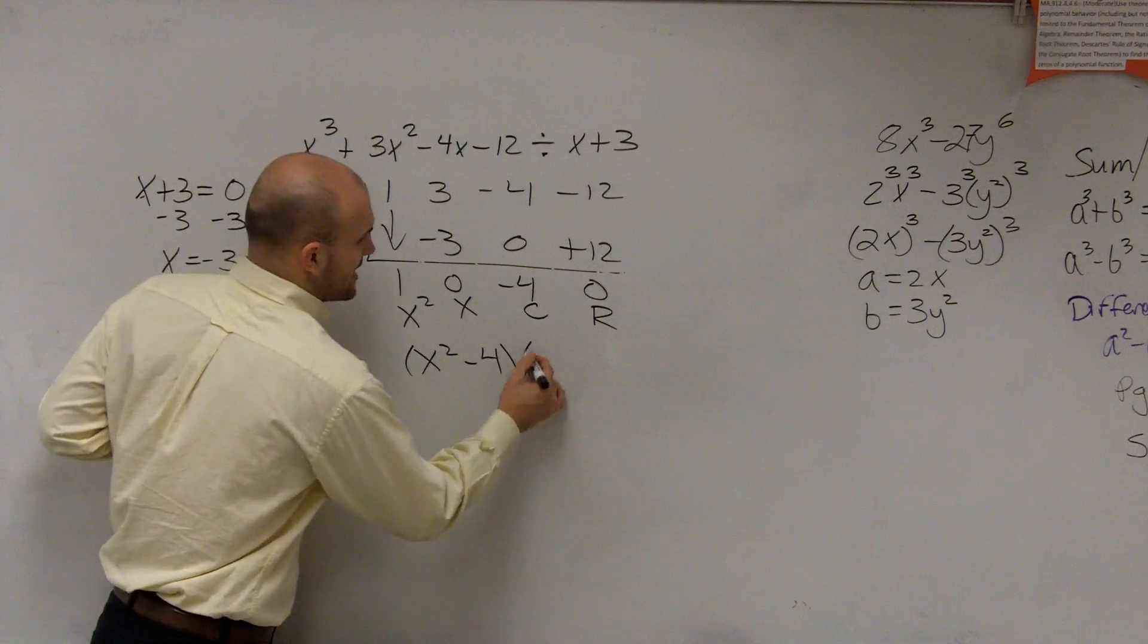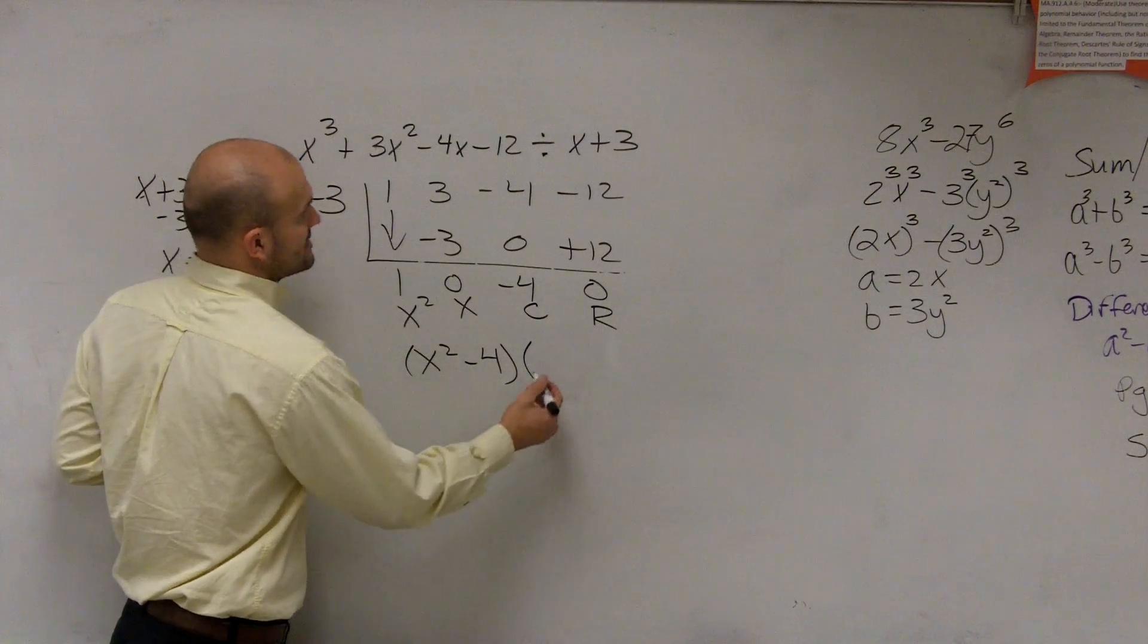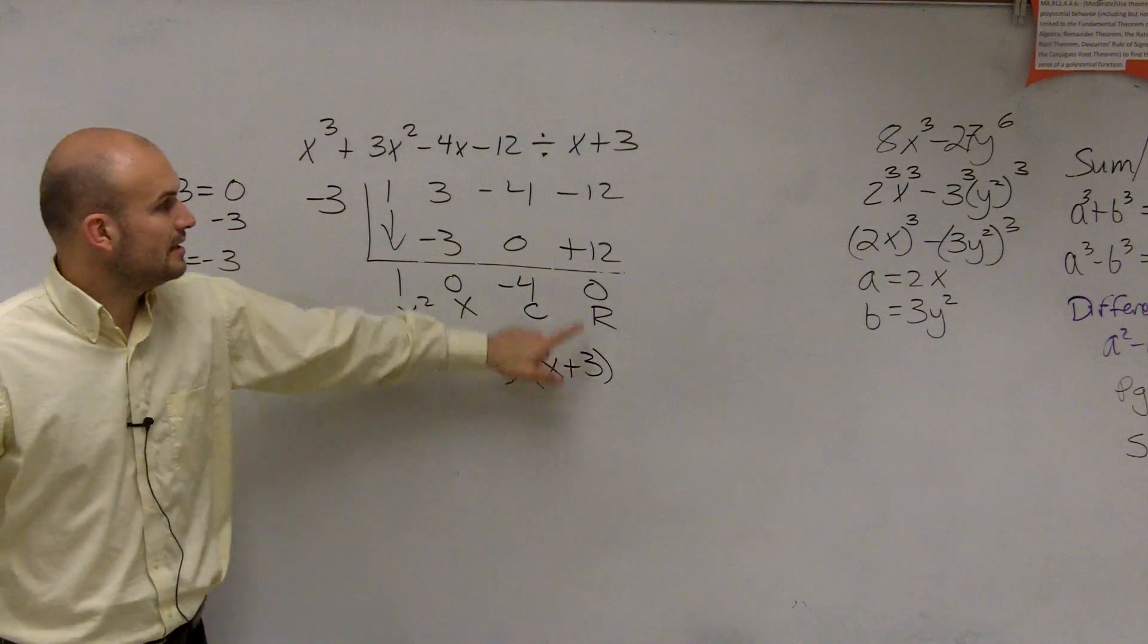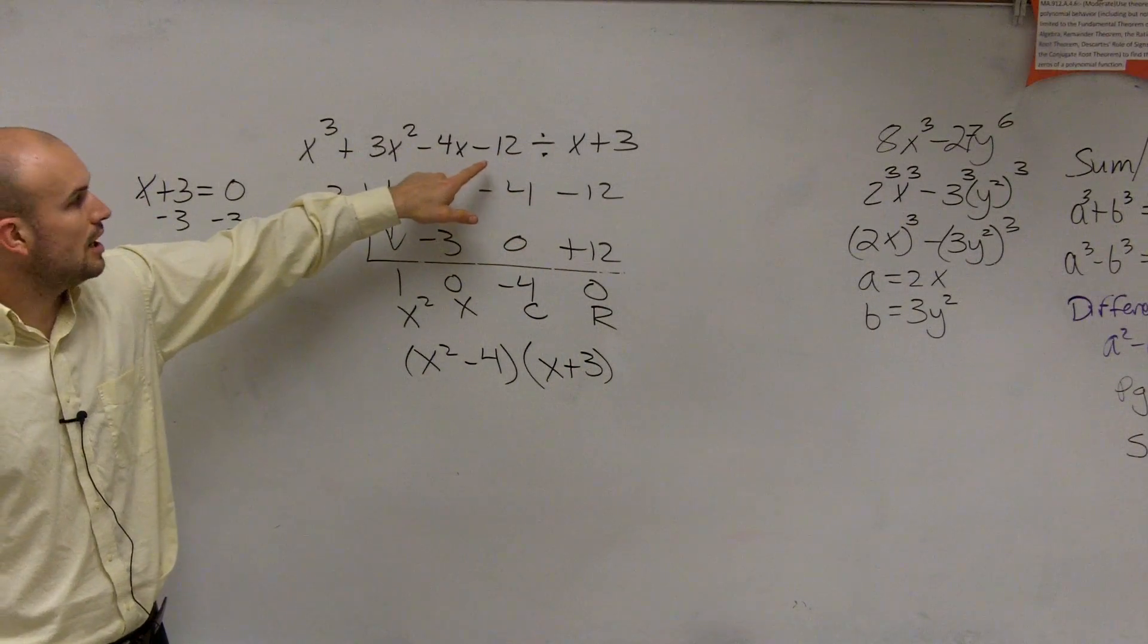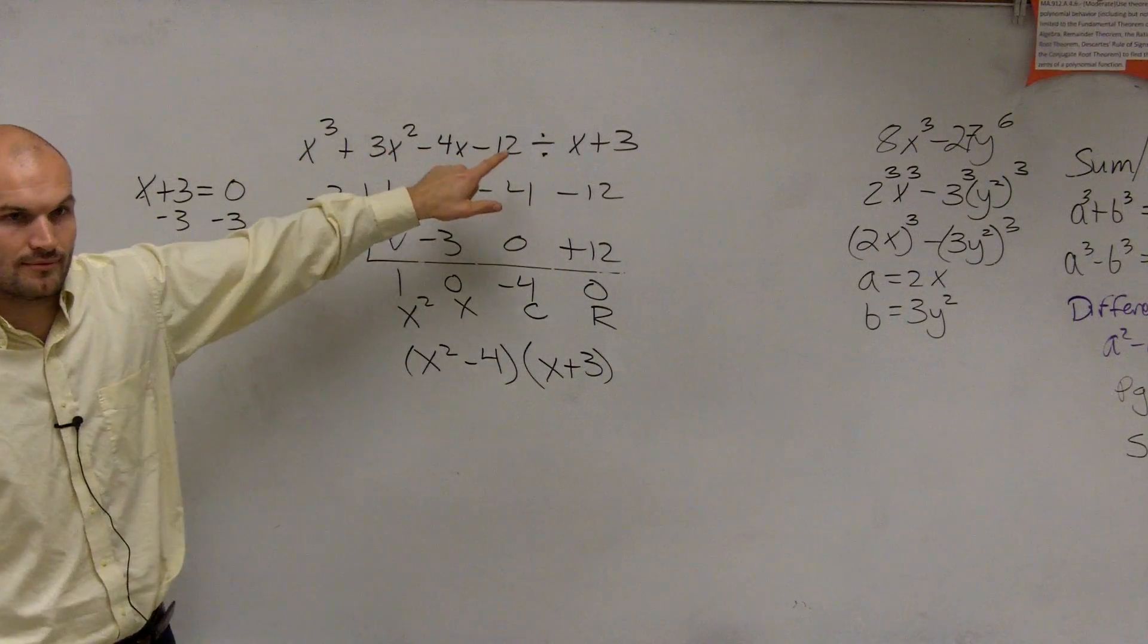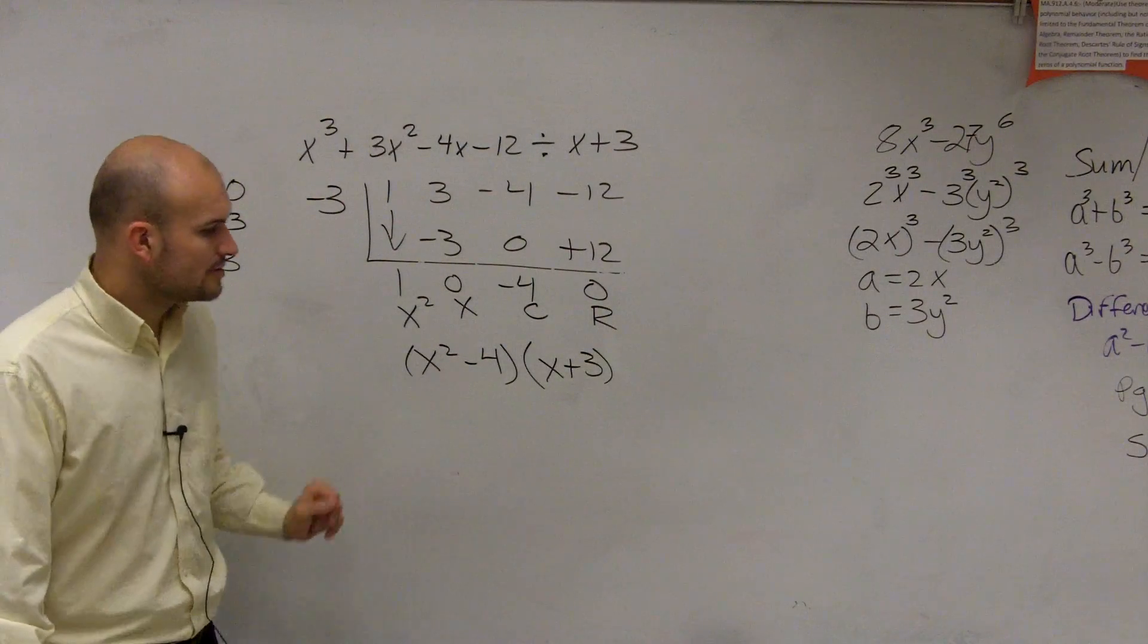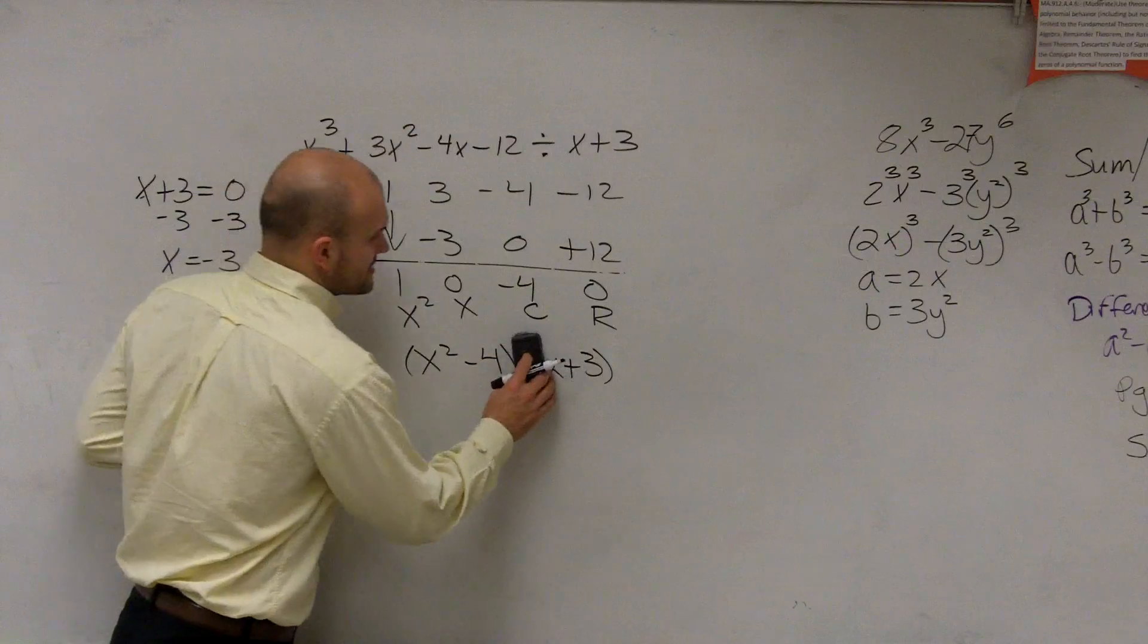So therefore, going back to it, I could say that x squared minus 4 times x plus 3 is going to equal my original polynomial, right? Now, for real. So what I want you guys to understand, so we look at this.